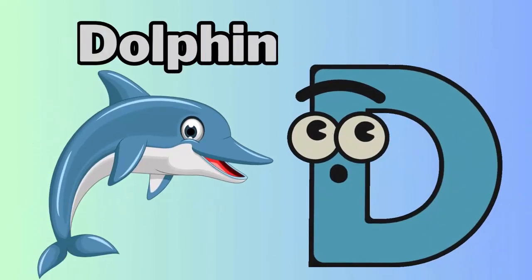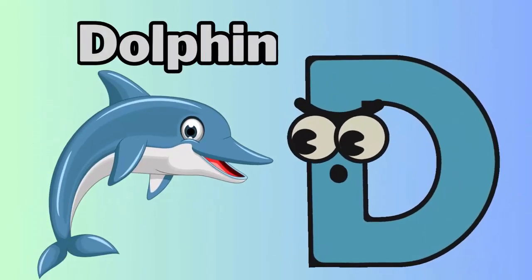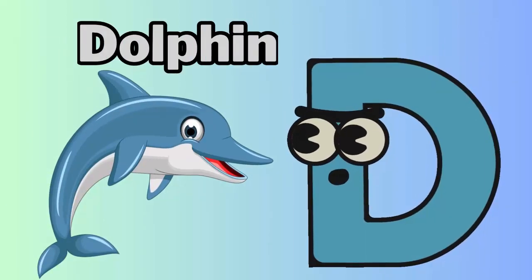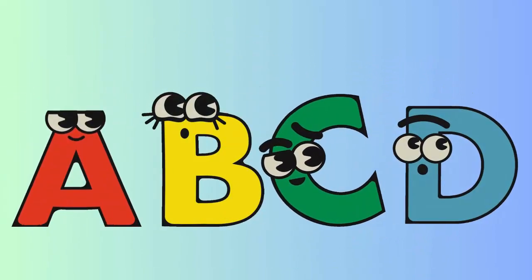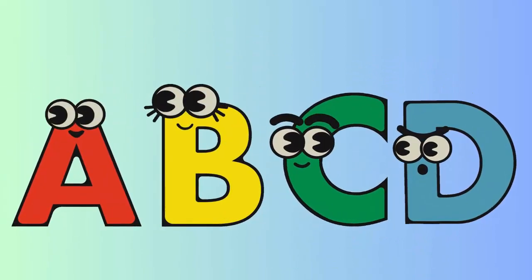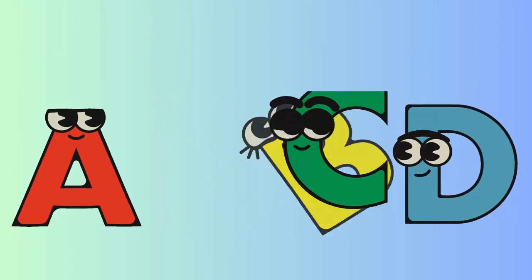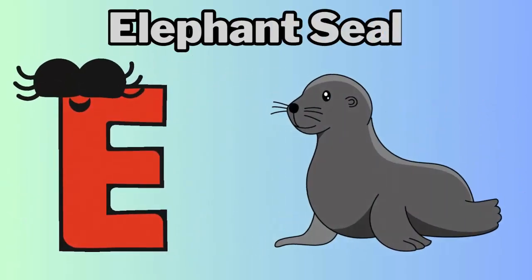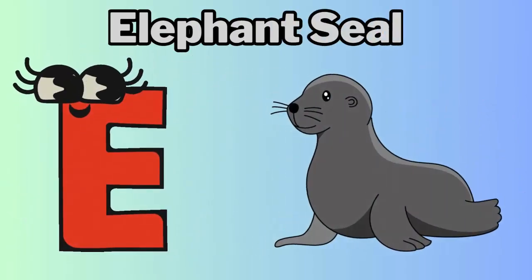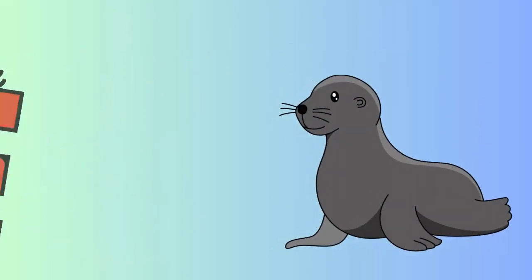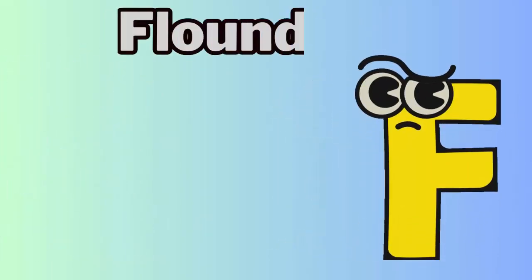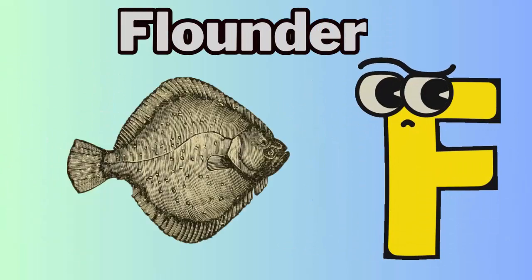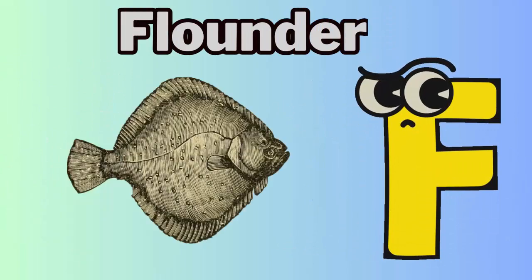D is for dolphin. Duh, dolphin. E is for elephant seal. Eh, elephant seal. F is for flounder. Fuh, flounder.